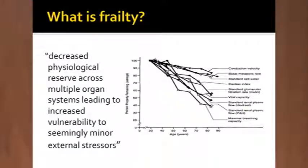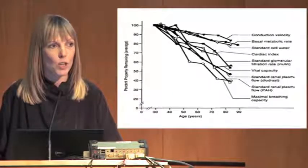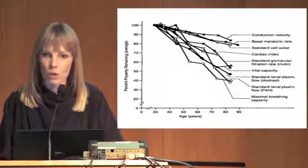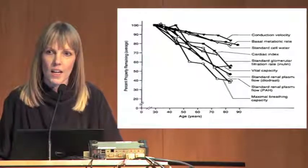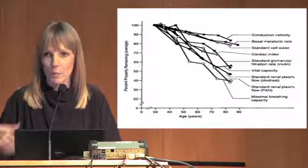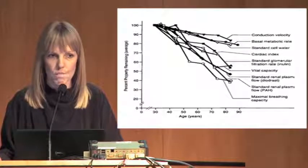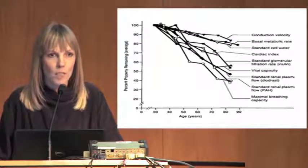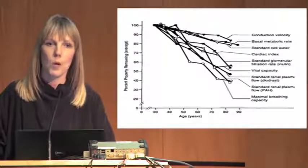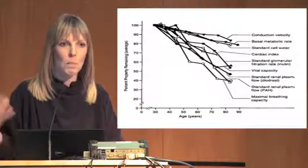Broadly speaking, what do we mean by frailty? Well, we know that it's one of those so-called geriatric syndromes - essentially a decreased physiological reserve which occurs across a number of different organ systems, such that the frail patient is then very vulnerable to what might actually be quite a minor external stressor or insult. With normal aging, we see a similar decrease across organ systems in functional reserve - in neuronal functioning, cardiac and respiratory reserve, and renal function - but what's different in the frail patient is that this decrease seems to be accelerated, getting to a point where homeostatic failure occurs.